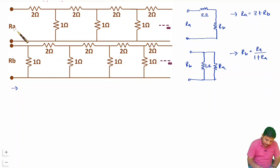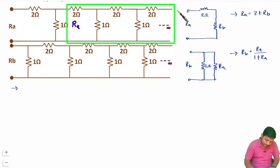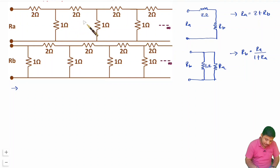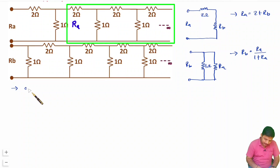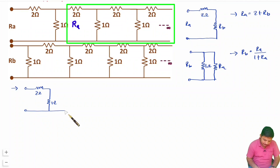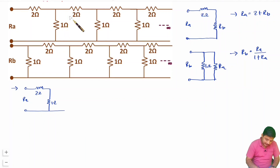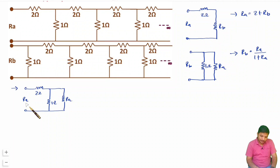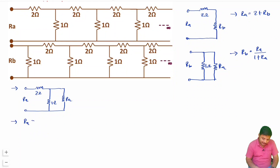To solve for RA, observe that from a certain point onwards the circuit is repeating. So I can consider that repeating portion as RA itself. I have a 2 ohm resistor in series, then a 1 ohm resistor, and then RA again — because it repeats to infinity. The 1 ohm and RA are in parallel, and that combination is in series with the 2 ohm. So RA equals 2 plus the parallel combination of 1 with RA.